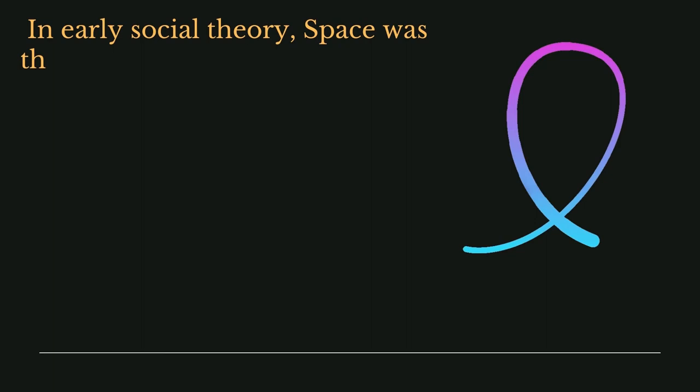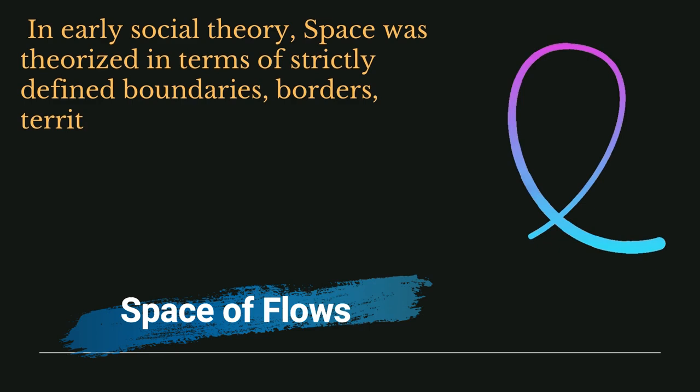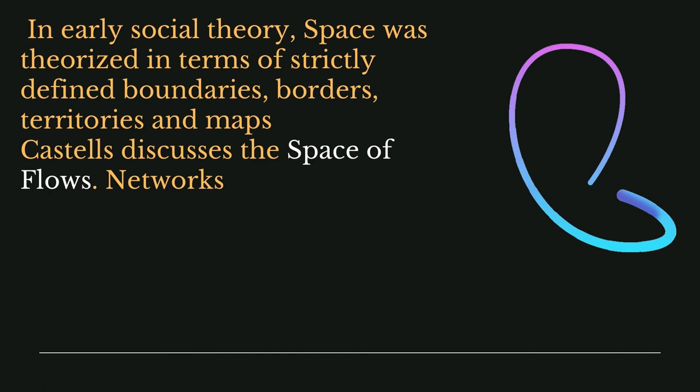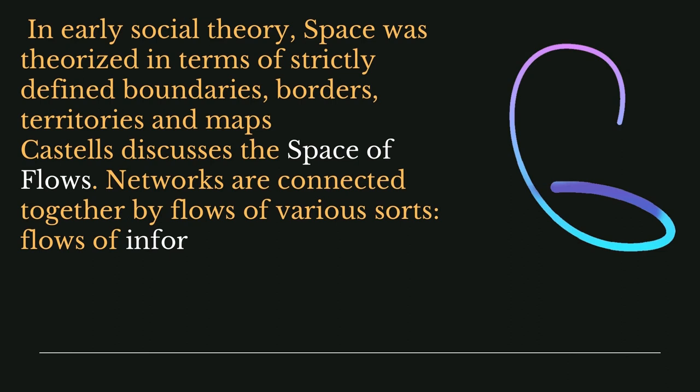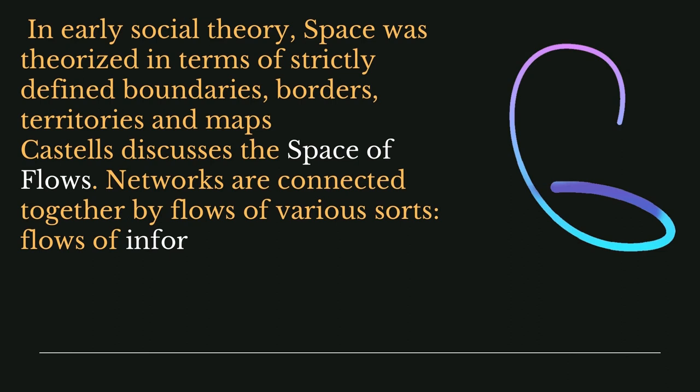In early social theory, space was theorized in terms of strictly defined boundaries, borders, territories, and maps. In the networked society, there is the space of flows. Networks are connected together by flows of various sorts — flows of information, flows of material, flows of money, and flows of people.